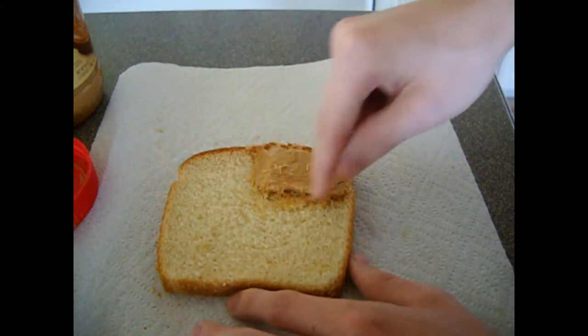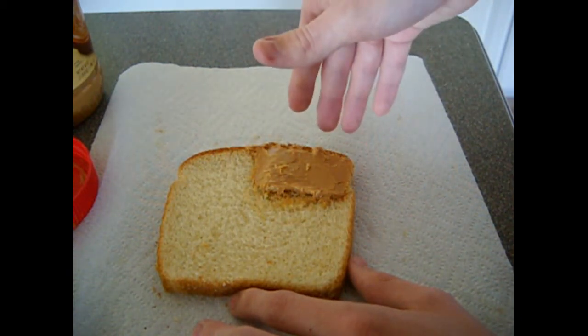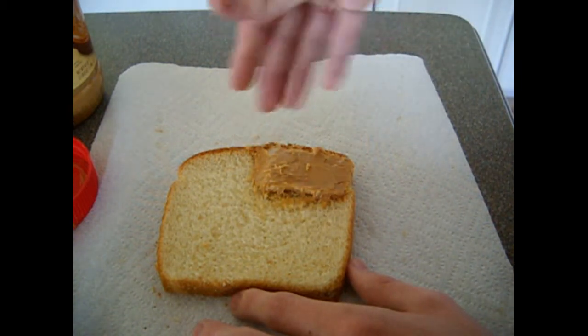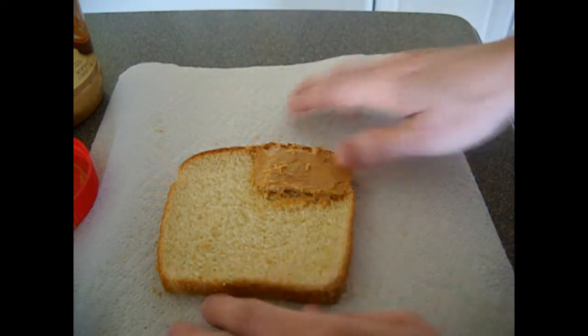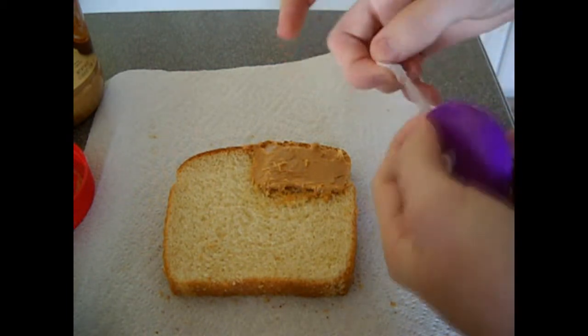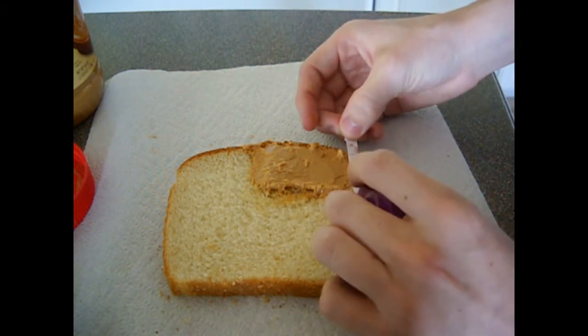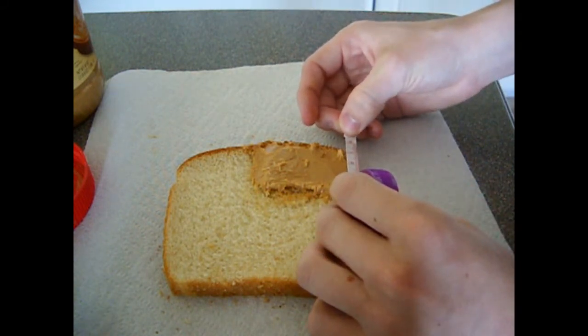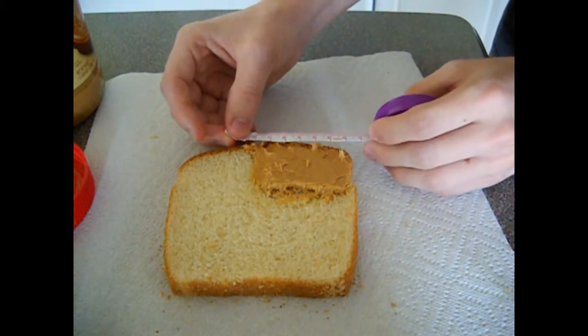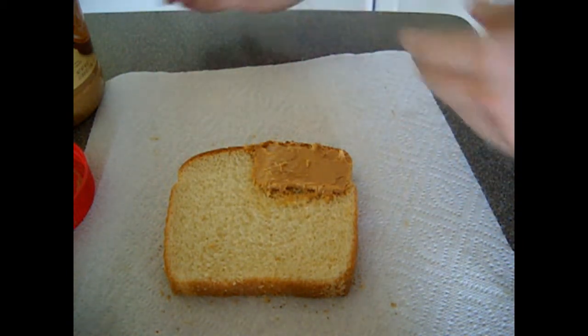So the area of this land plot right here, peanut butter land, is gonna be length times width. As you've probably learned from my beautiful singing at the beginning of the video, we know that the rectangle is length times width. So let's take measurements. We'll scale this as I said, one centimeter to one foot. So let's see. The length of this peanut butter land is 4 centimeters, so 4 feet. And the width of my land is 6.5 centimeters, which is 6.5 feet.